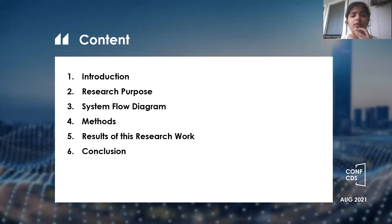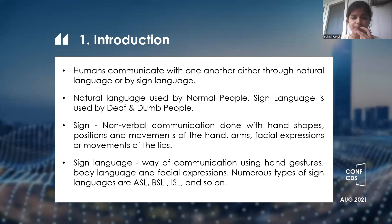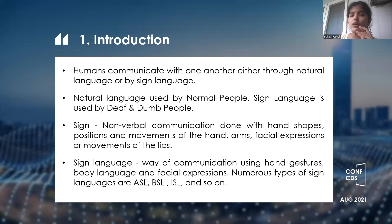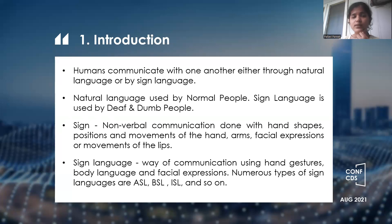Now I will be explaining a brief introduction. Communication is very important for each and every individual person so that they can express their feelings and emotions easily to others. For normal people, natural language is used, but think about the people who are deaf and dumb. They cannot speak or hear, so natural language is not used for them. There is a special language for them to express their feelings — that is sign language.